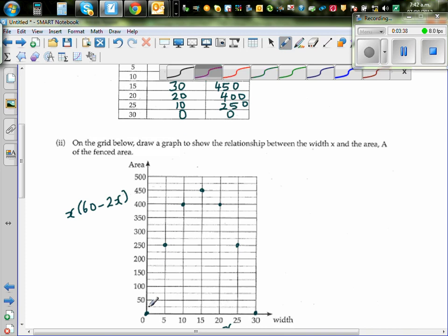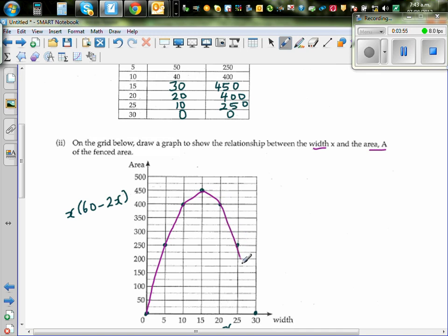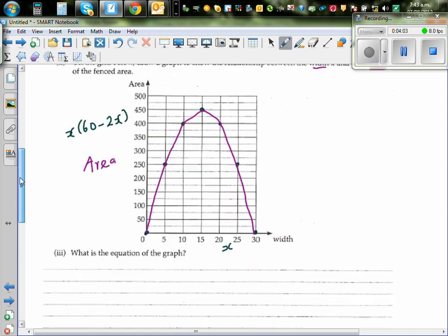Let me draw the curve. On the grid below, draw the graph to show the relationship between width x and area A of the fenced area. If you draw the graph, it will be a parabola. You have to join the dots with a smooth curve. This is the relationship between area, or width, and area.